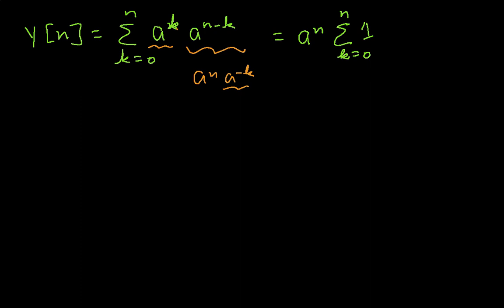So in general, this summation, this guy here, is just going to be n plus 1, because there are n plus 1 terms of 1 in the summation. So if I write this out then, I get that the convolution is equal to n plus 1, a to the n.